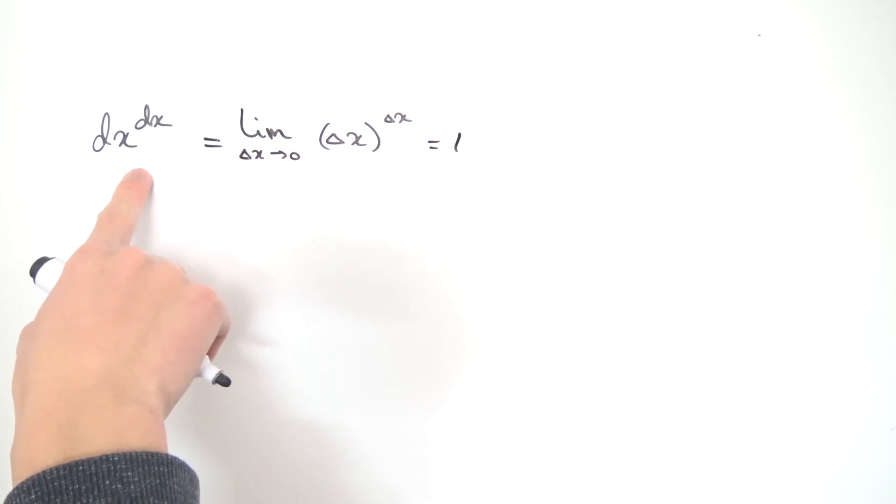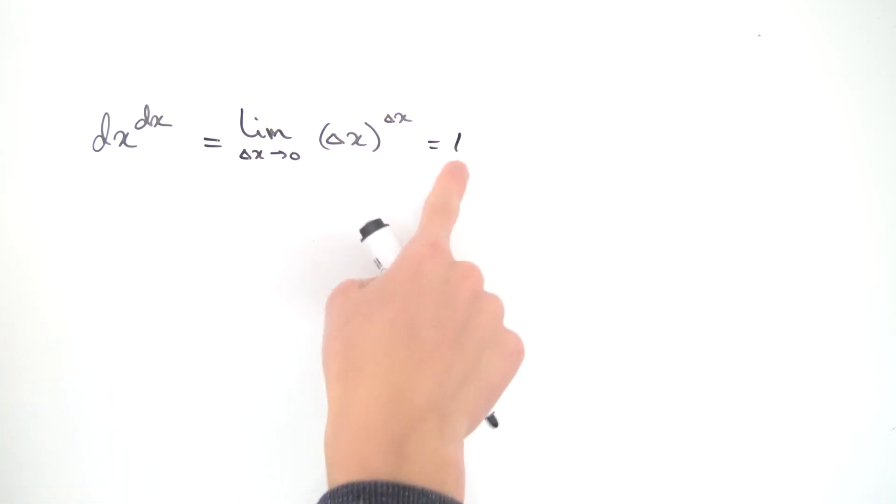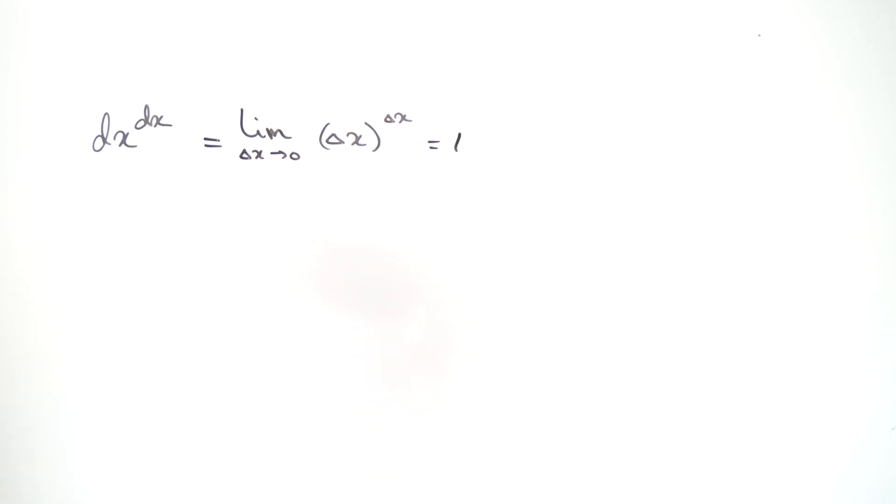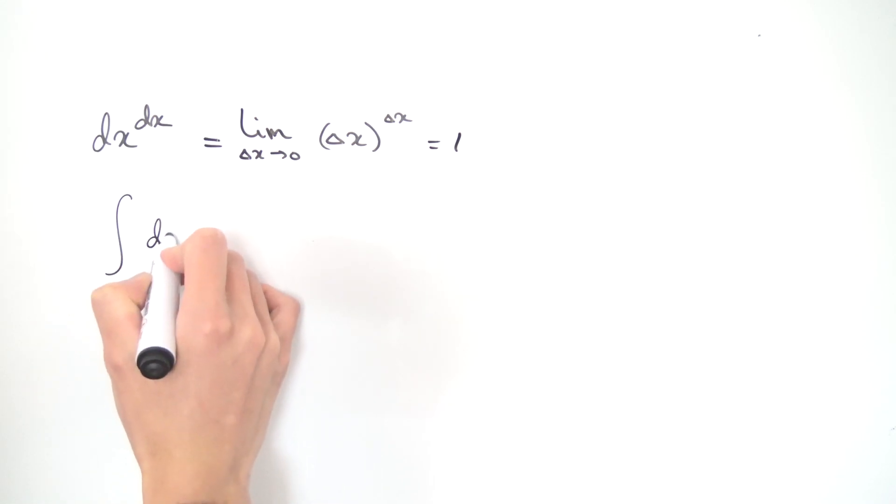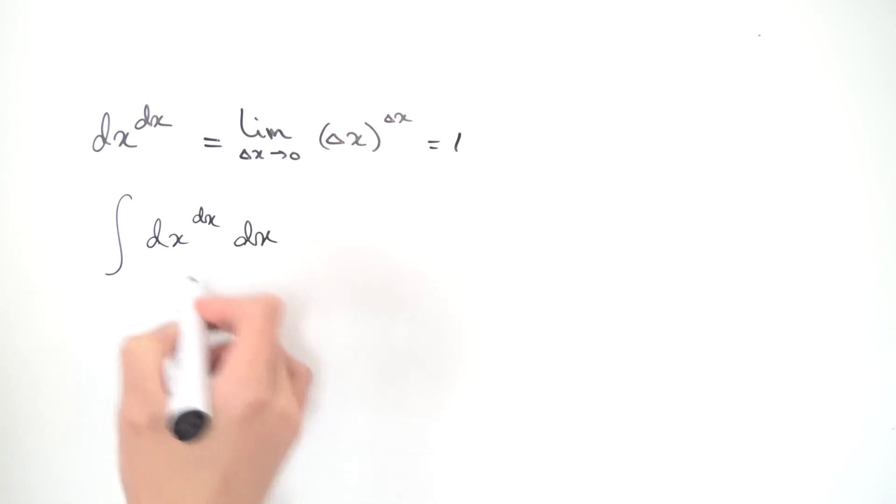So once we have this now, we can understand dx to the dx as being exactly one. That's nice. So we can do funny things like integrating dx raised to the dx, dx. Because this guy over here, that's just one. So this becomes x plus some arbitrary constant c.